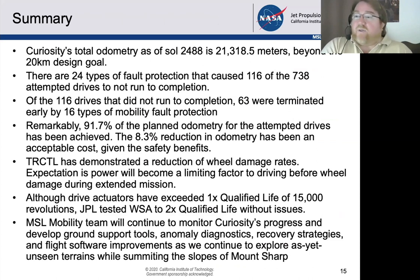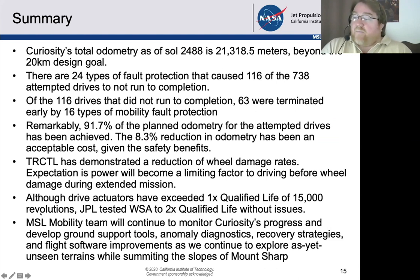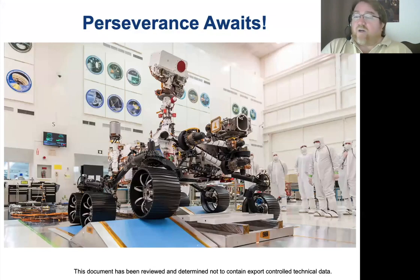In summary, we've done really well with our mobility — we've achieved over 21 kilometers, which is past the 20-kilometer design goal. We have a lot of fault protection that can stop a drive, but even so we've achieved over 92% of the commanded motion. Our fix for the wheel forces has been working very well, extending the mission and enabling continued mobility. We're looking forward to the next rover landing, Perseverance, and we'll hear a talk about its planning system later this afternoon.